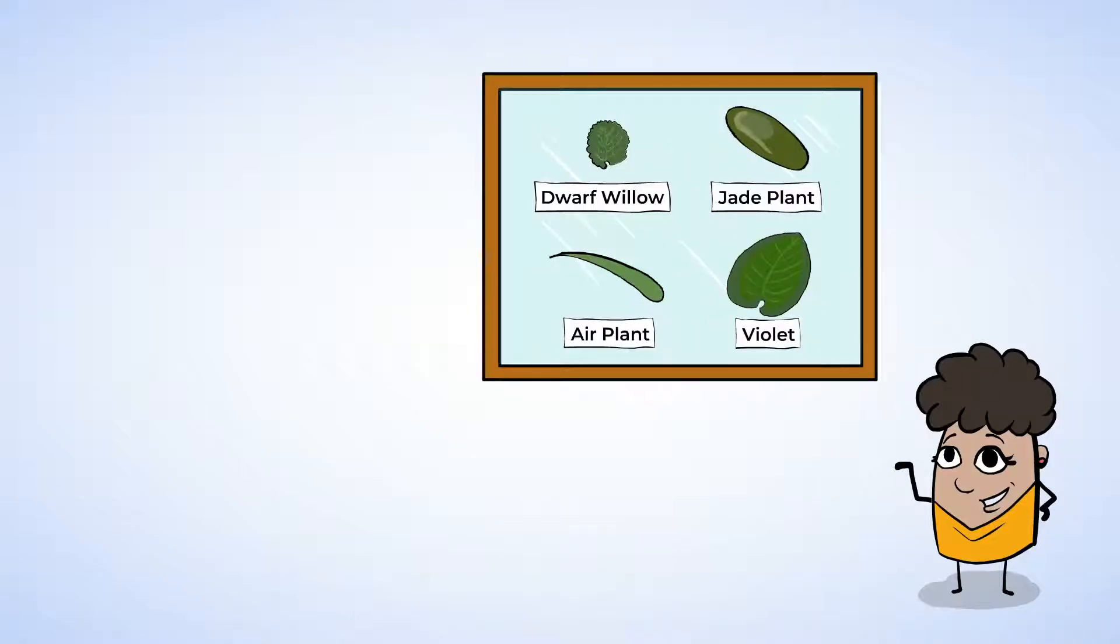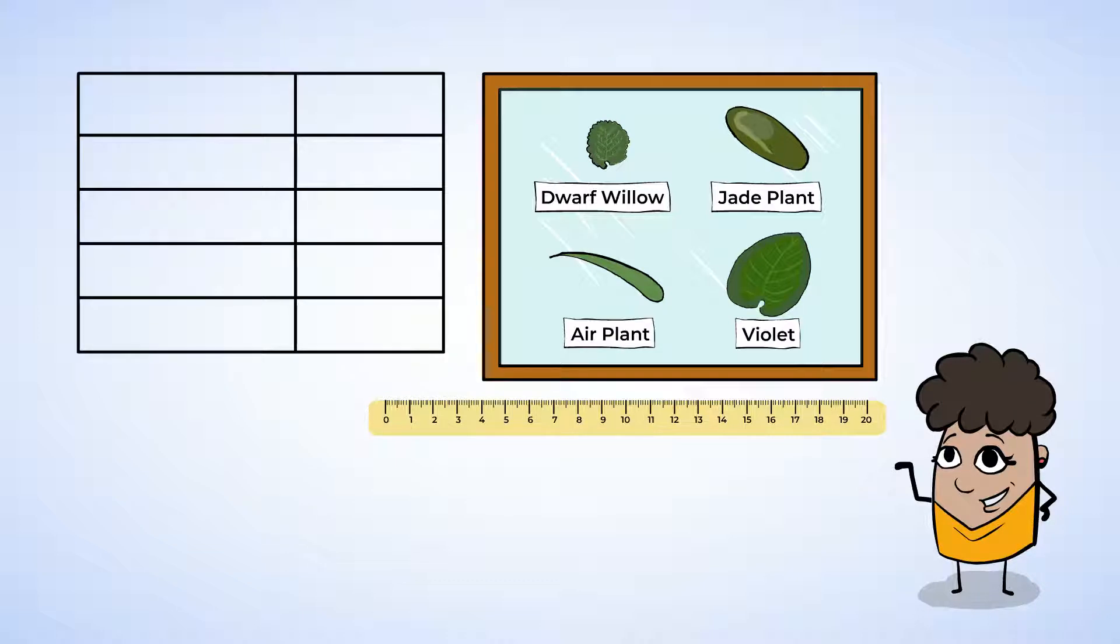Look at this leaf display. This shows four of the smallest leaves ever collected, with a ruler to measure them. Let's give it a go. We already know that it's helpful to make a table when collecting data, so to start, let's make two columns. We can title one Leaves, and the other, Length.